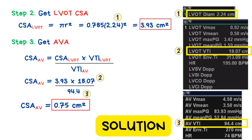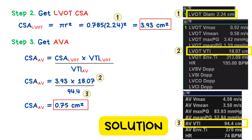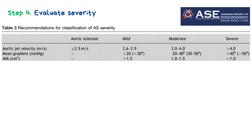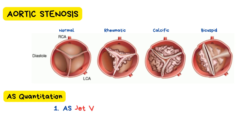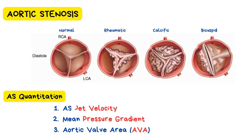Did you get the same answer? Feel free to drop your calculation or any questions in the comments. Now that we've calculated the aortic valve area, let's evaluate its severity. In our example, the AVA is 0.75 square centimeters. According to the guidelines, an aortic valve area less than 1 cm² is classified as severe aortic stenosis — so this patient is diagnosed with severe aortic stenosis. To wrap up: when assessing aortic stenosis, always remember the three key measurements — aortic jet velocity, mean pressure gradient, and aortic valve area. Thanks for following along; feel free to review, re-watch, and ask questions in the comments.